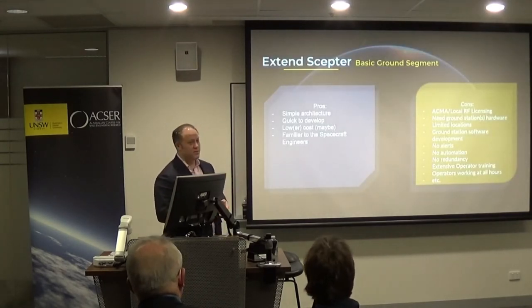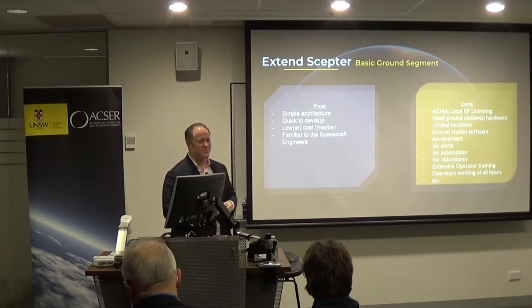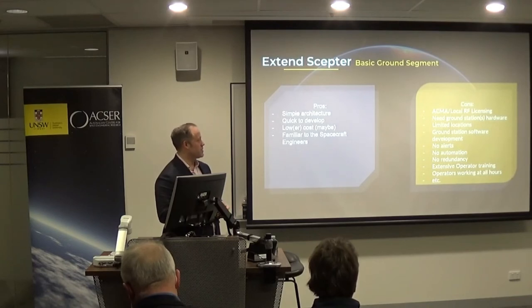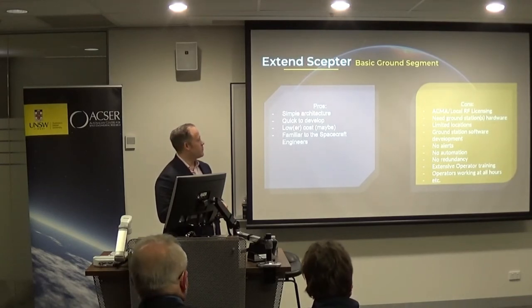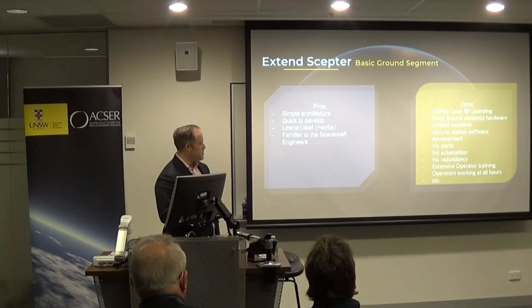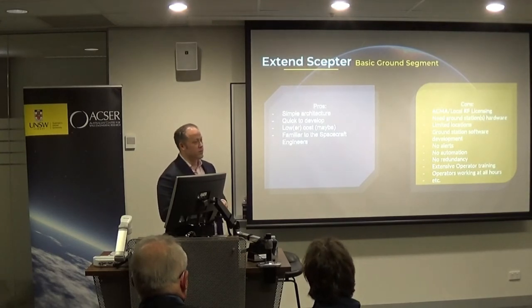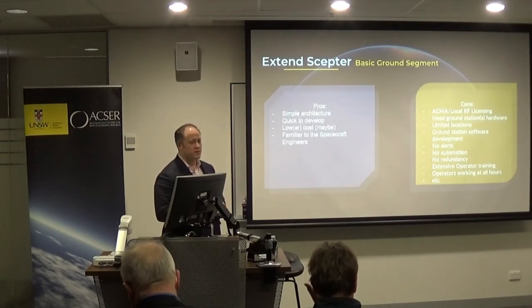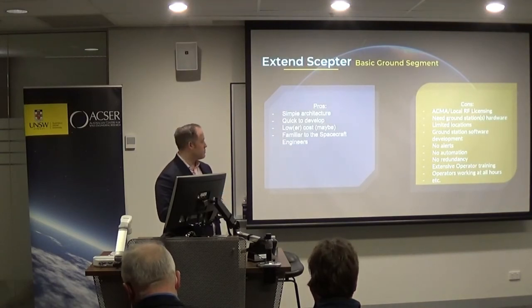There are basic pros and cons. Anyone who's dealt with ACMA knows the joy of licensing a ground station. You actually need to buy the ground station hardware or build it. There are limited locations you're allowed to transmit from. You need to develop all your ground station software to make it reliable. You don't have any alerting, no automation, no redundancy if something goes wrong. You have to train your operators, and if the pass is at 2am and you've got no way of scheduling it, you're up at 2am running your spacecraft.